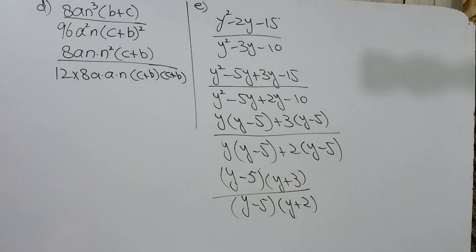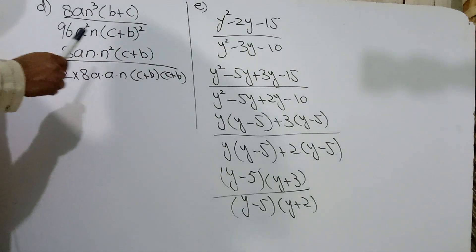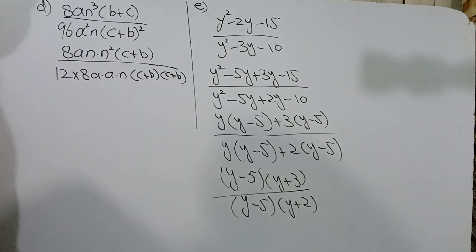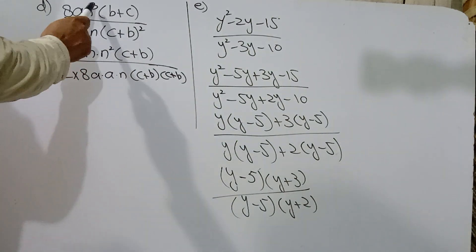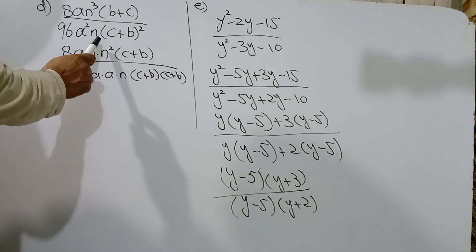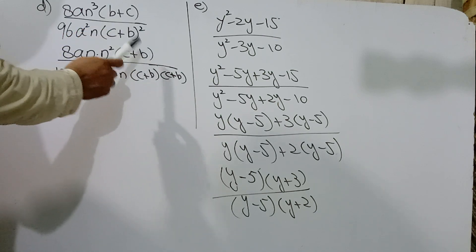Part D. 8an³(b+c) over 96a²n(c+b)². Now 8an³ into n²(b+c). We can write c+b.